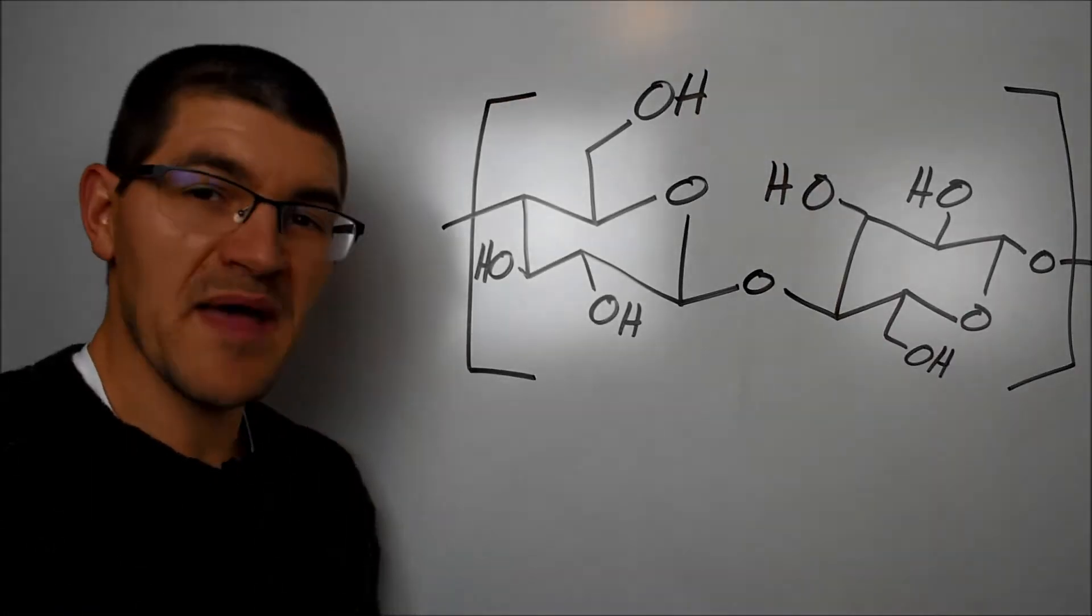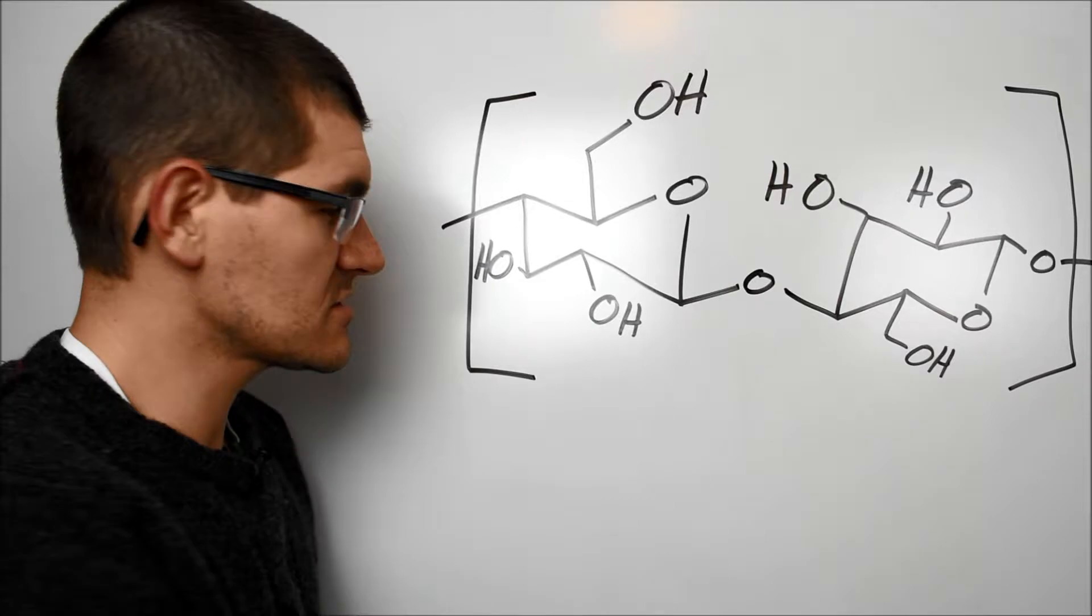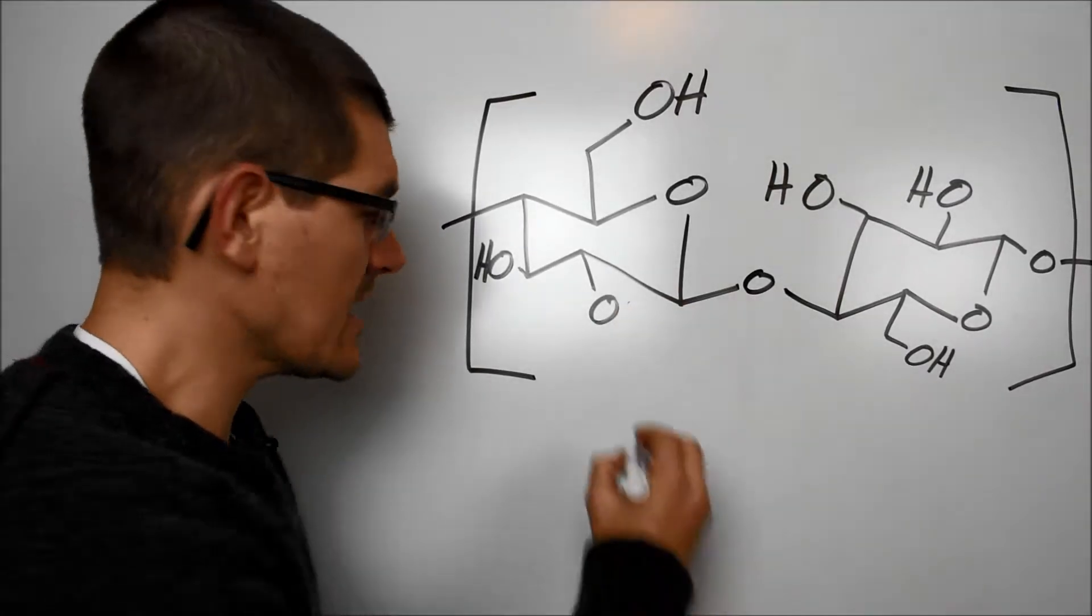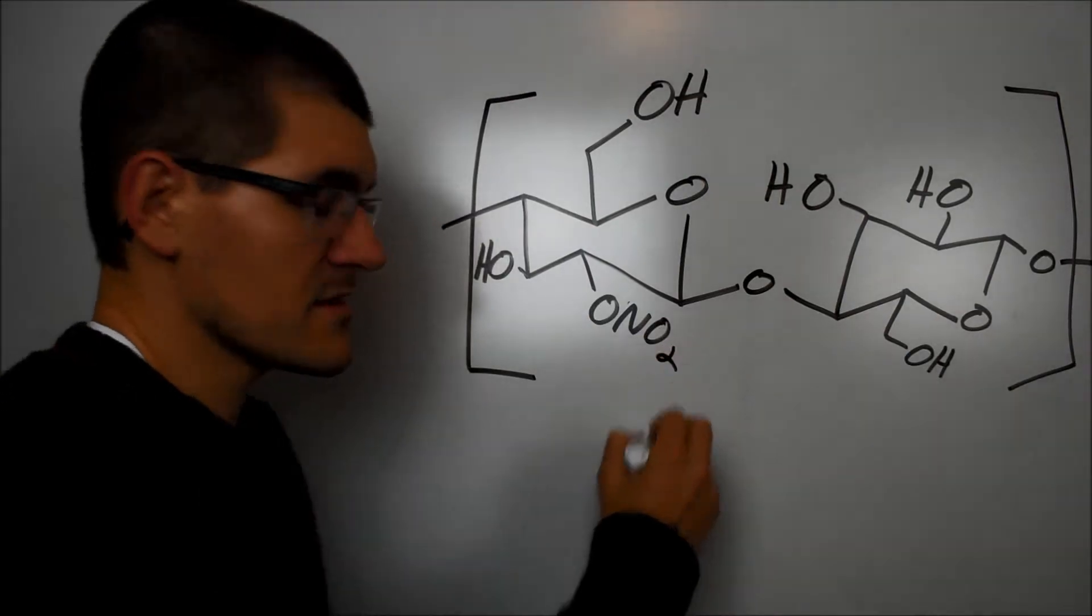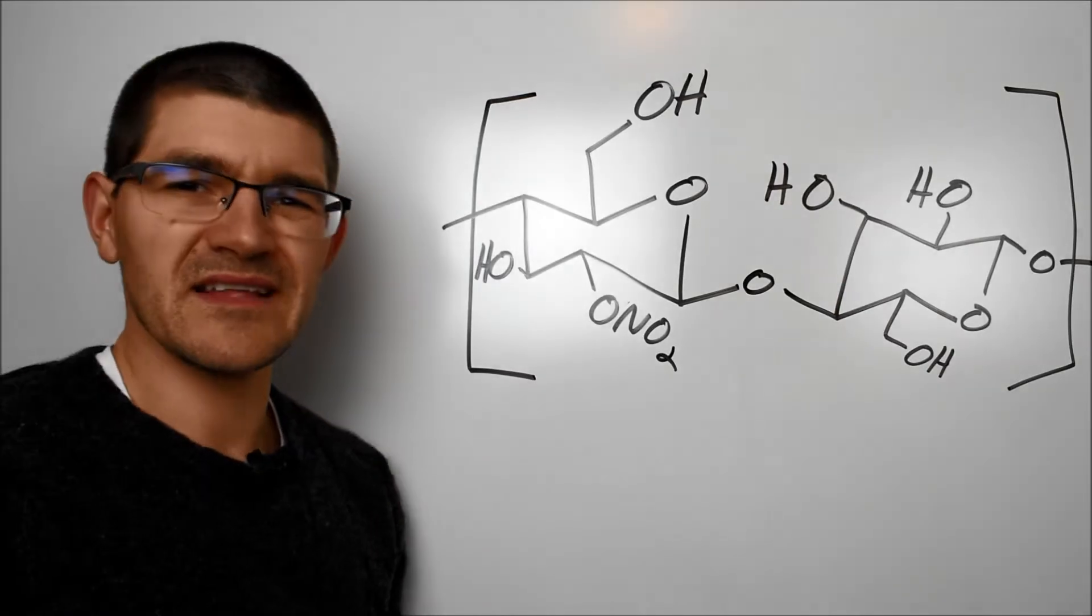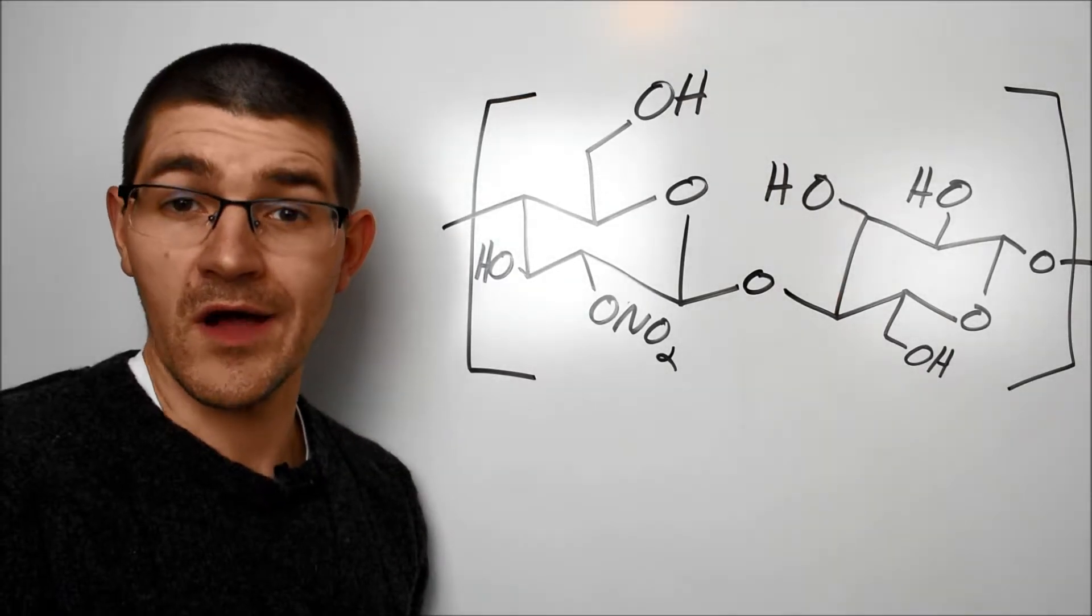You take this cellulose backbone that has all these pendant OH groups here and essentially just splash nitric acid at it, and you convert some of these OHs to the nitrate ester ONO2 group. Theoretically, you can convert all the pendant OH groups into these ONO2s, but in practice, you generally leave a few here or there that are un-nitrated.